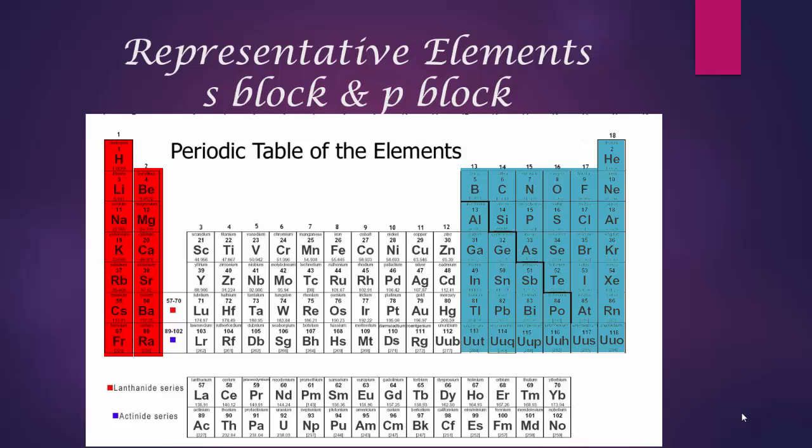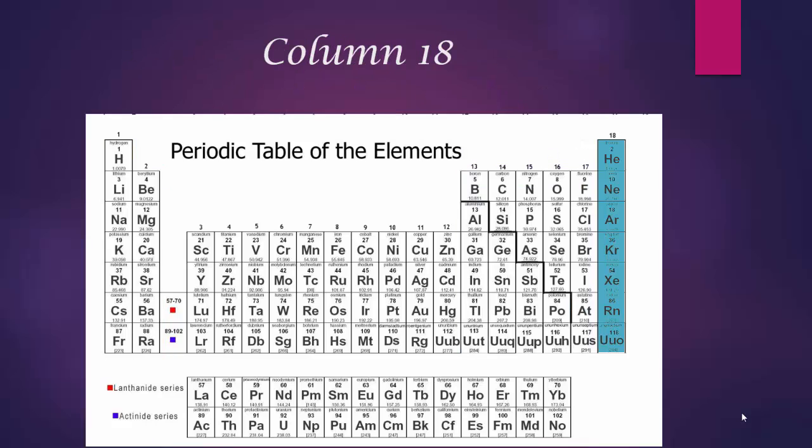It turns out that all of the elements in the first column have 1 valence electron, the second column have 2 valence electrons, in the third representative column have 3, 4 in the fourth, 5 in the fifth, 6 in the sixth, 7 in the seventh. Now, the 18th column is slightly different. These are the noble gases, gases that really don't interact with anything. And they do not all have 8 valence electrons.